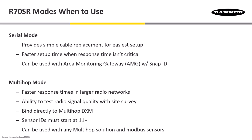Now, when we're doing this, sensor IDs and radio IDs must start at 11 or higher. And these, when in Multi-Hop Mode, can be used with any Multi-Hop solution that's utilizing serial or Modbus sensors.